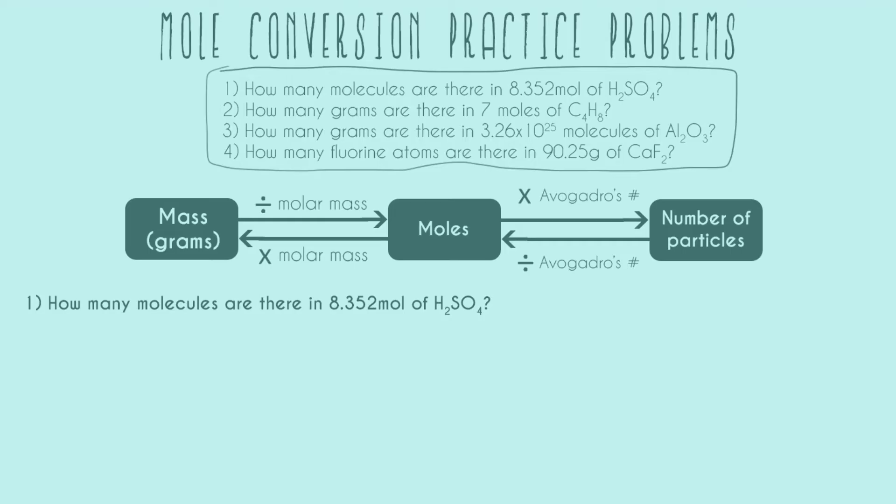So number one, how many molecules are there in 8.352 mole of H2SO4? We need to identify our start and our finish to know what conversions we're going to have to do. Our start is what we're given, 8.352 mole. Our finish is what we're asked for, so how many molecules. This is our finish because once we have how many molecules we're finished with the problem. And now we can go ahead and connect the arrow taking us from start to finish. We can see we're going to have to multiply by Avogadro's number.